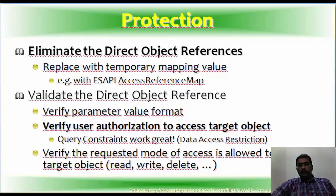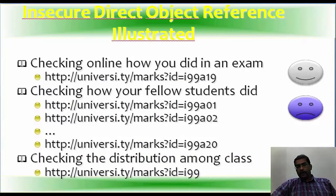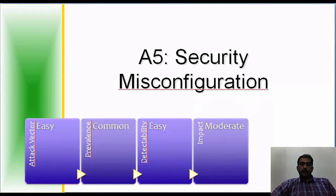To fix this: eliminate the direct object reference and replace it with a temporary mapping value — for example, using OWASP ESAPI Access Reference Map. Validate the direct object reference by verifying the parameter value format, verifying user authorization to access the target object, using query constraints for data access restriction, and verifying the requested mode of access — read, write, or delete — is allowed. The ID-based approach should not be used in a form where an attacker can simply decipher and exploit an insecure direct object reference.